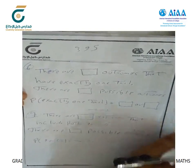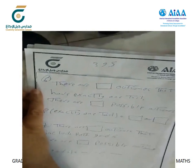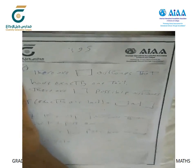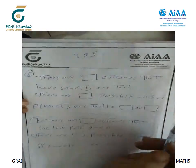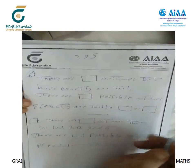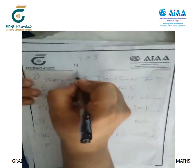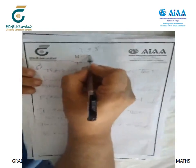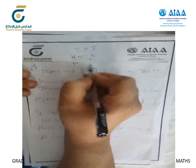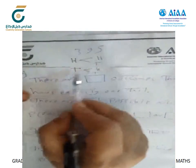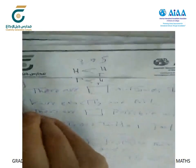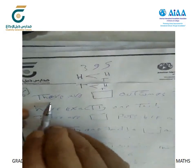A coin is flipped twice in succession, and the sample space is shown. Flipping twice means the first result may be heads or tails, and the second result may also be heads or tails. So we have: heads-heads, heads-tails, tails-heads, and tails-tails — four total outcomes. How many outcomes have exactly one tail?